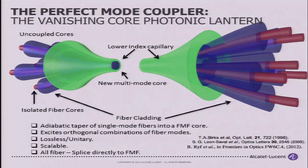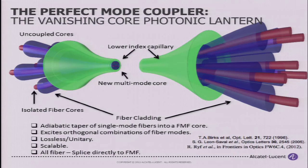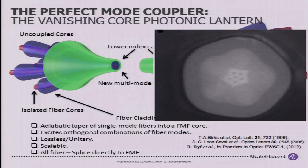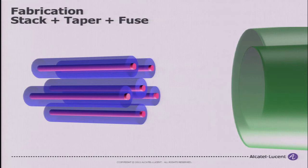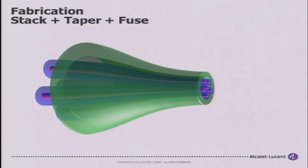The same type of multiplexer can also be made in an all-fiber version. You start by taking single-mode fibers, placing them in a cylindrical capillary with a lower refractive index than the cladding, then tapering the structure down. Once completely tapered, the single-mode fiber cores are too small to guide light by themselves, and the light is guided in the cladding, with a new cladding formed by the capillary. The advantage of this all-fiber device is that it can be spliced directly to a few-mode fiber and to single-mode fiber.